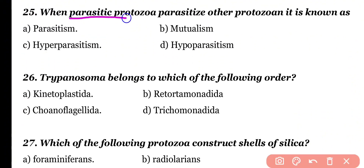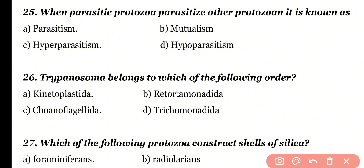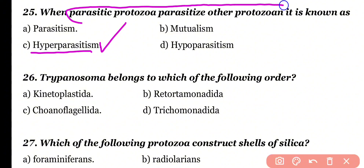Question number 25: When parasitic protozoa parasitize other protozoans, it is known as — parasitism, mutualism, hyperparasitism, or hypoparasitism? Correct answer is option C. Hyperparasitism is the process when parasitic protozoa parasitize other protozoans.